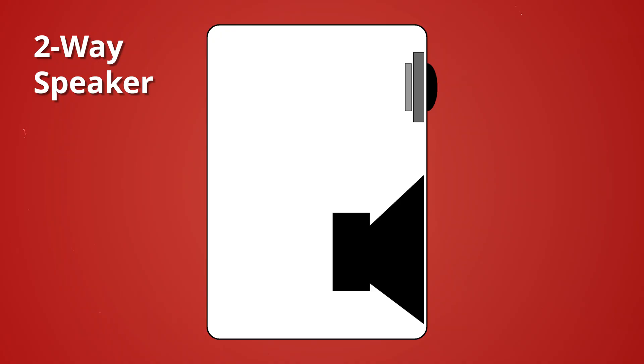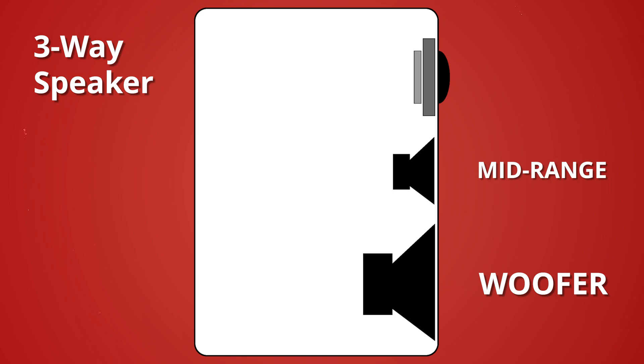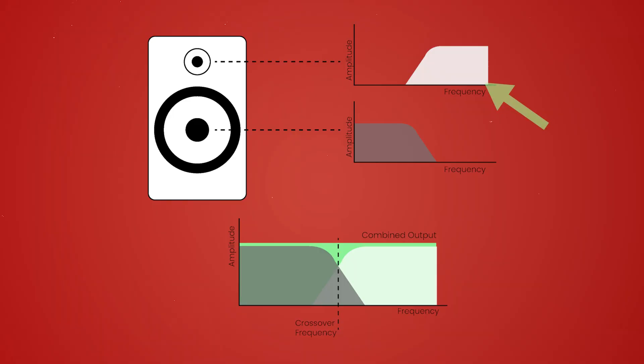A two-way speaker incorporates a woofer and a tweeter. A three-way speaker incorporates a woofer, mid-range driver, and tweeter. In a two-way speaker, the crossover is set at a specific frequency point. Any frequencies above that point are sent to the tweeter, while the remainder are sent to the woofer.